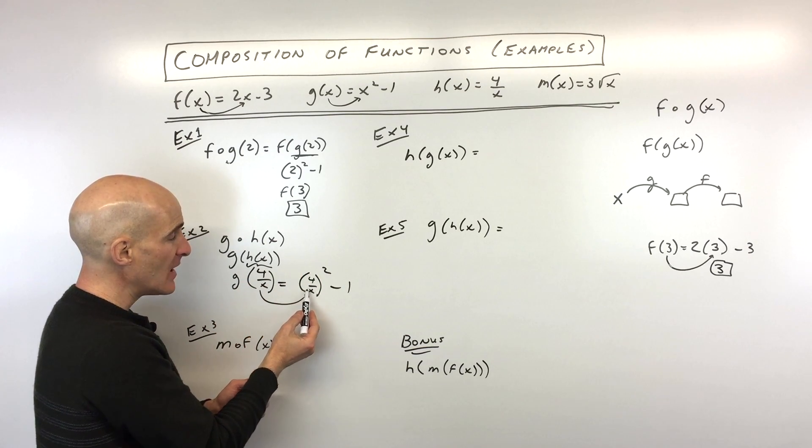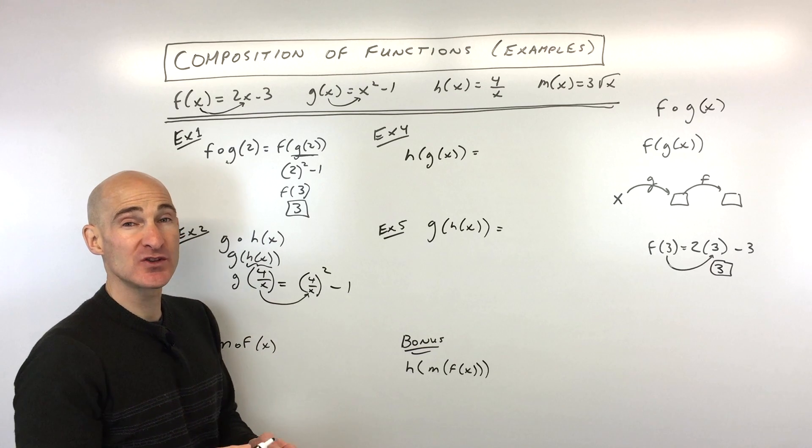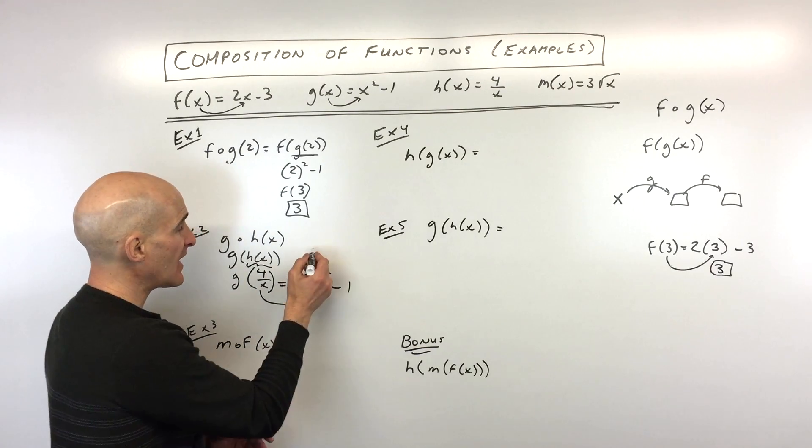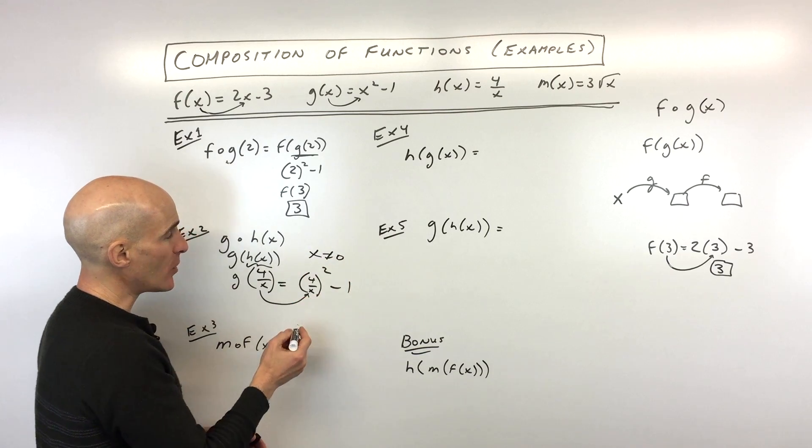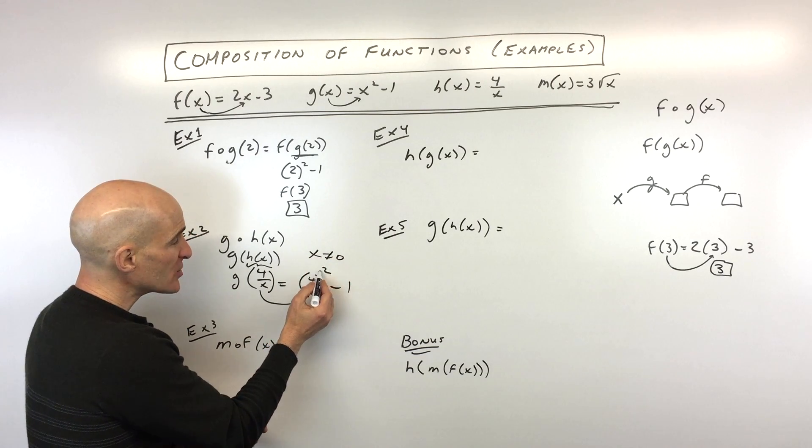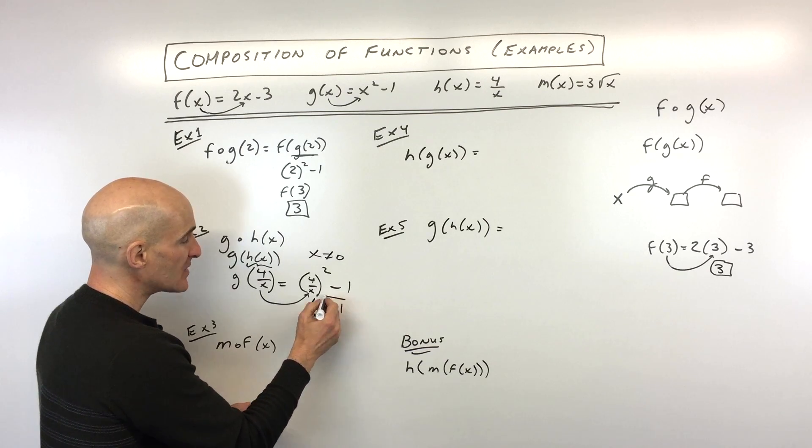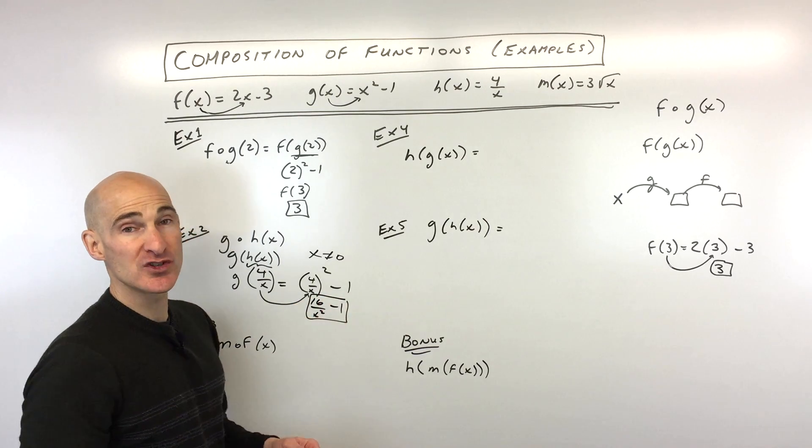So before I simplify, I analyze and say, looks like x cannot equal zero, because we can't divide by zero, that's undefined. So you might want to state that at this point, x cannot equal zero. But let's simplify. We're going to square the numerator, square the denominator, that's 16 over x squared minus 1, and that's your final result.